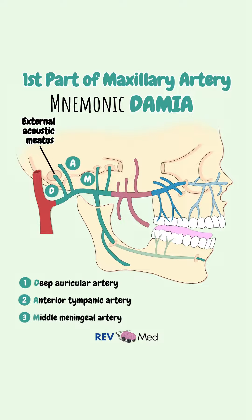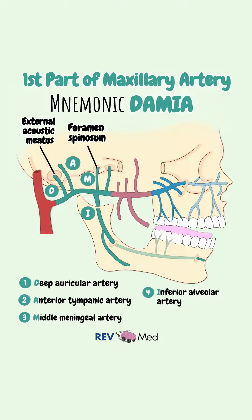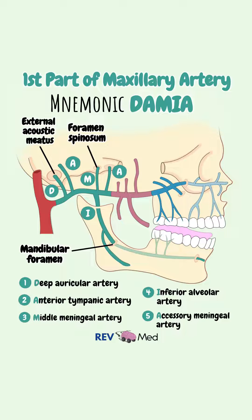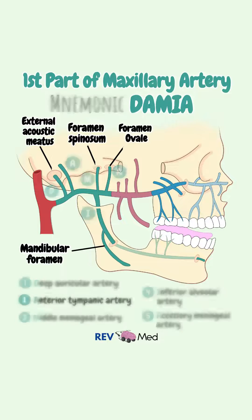M for the middle meningeal, which enters the spinous foramen. I for the inferior alveolar, which enters the mandibular foramen. And finally, A for the accessory meningeal artery, which enters the foramen ovale.